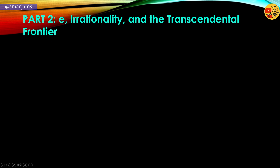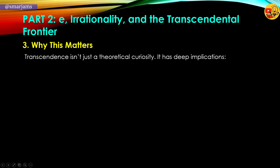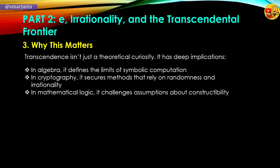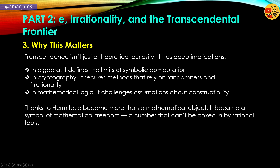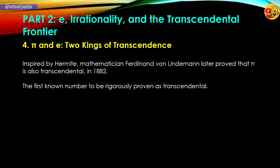And why does this matter? Because transcendence shapes the very core of mathematics and logic. In algebra, it defines the limits of symbolic computation. In cryptography, it underpins methods that rely on unpredictability. And in mathematical logic, it questions what's even possible to construct. Thanks to Hermite, e became more than just a number — it became a symbol of mathematical freedom. Inspired by this, Ferdinand von Lindemann proved in 1882 that pi is also transcendental. But e led the way — it was the first number ever shown, rigorously and formally, to transcend the reach of algebra.